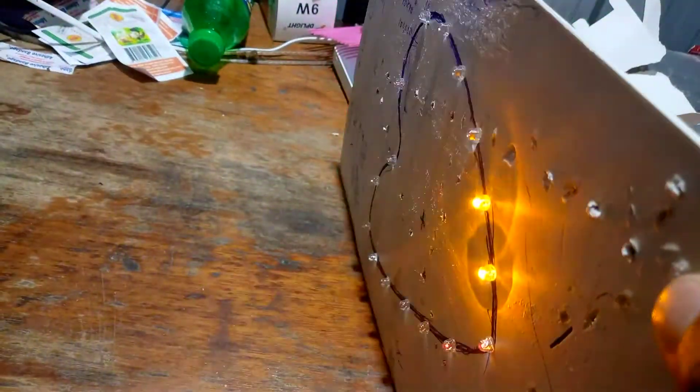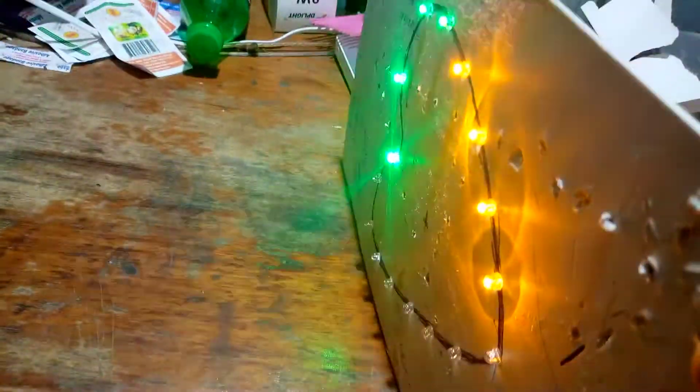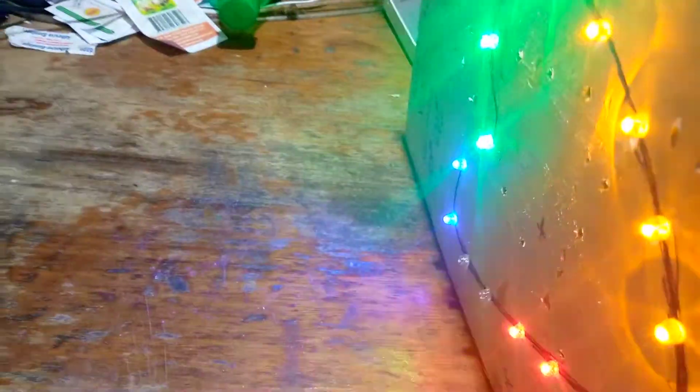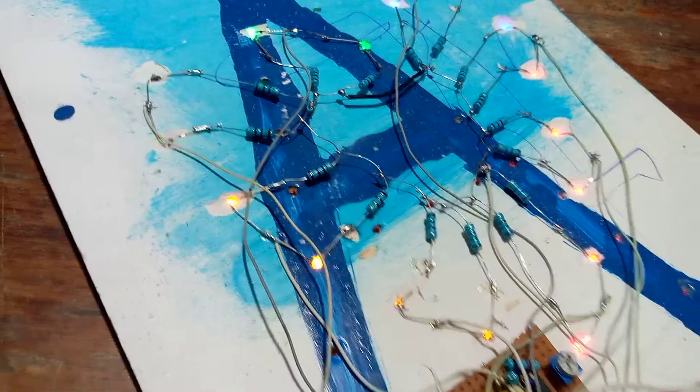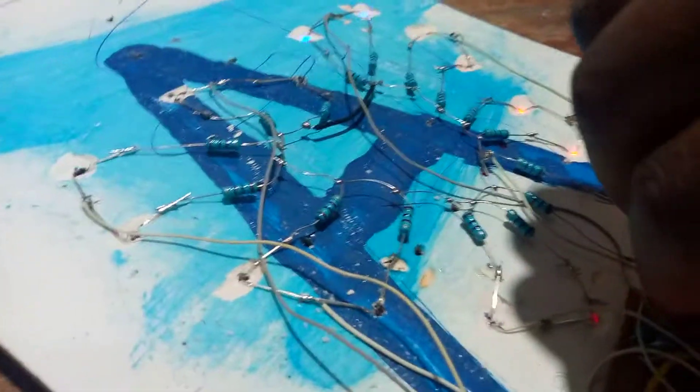You see the variable resistor there? Its work is to make sure that the speed of that blinking or the speed of the racing is either slower or faster. Let's see if we can lower that.